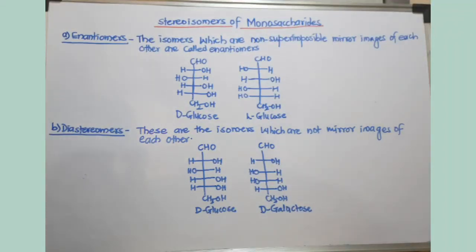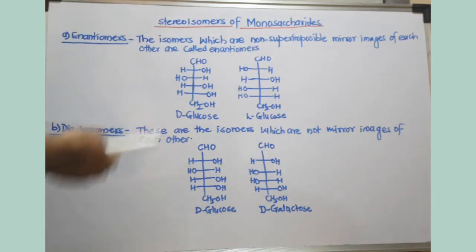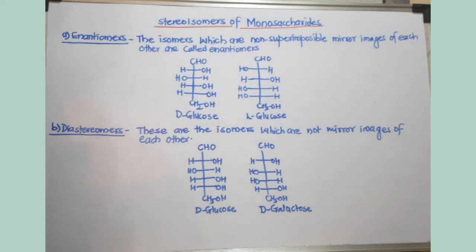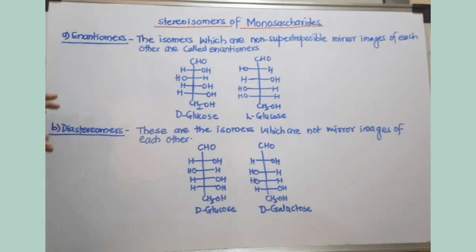Stereoisomers of monosaccharides. In this video we are going to discuss what is the meaning of enantiomers in case of monosaccharides, what is the meaning of diastereomers, and what are epimers. These three terms are useful to understand carbohydrates or monosaccharides further. We will revise all of these terms in this video.